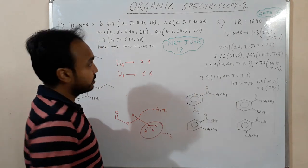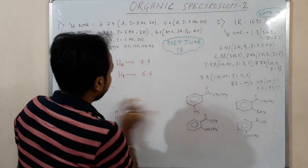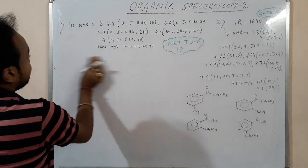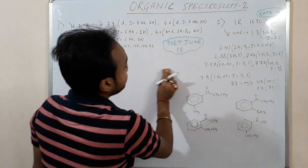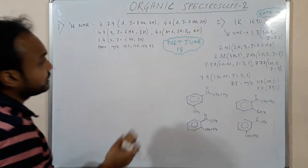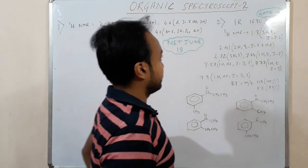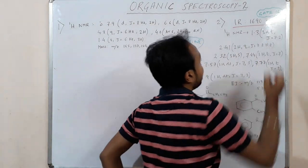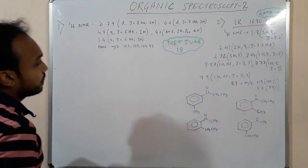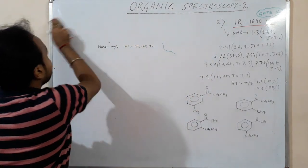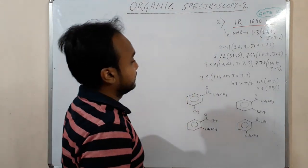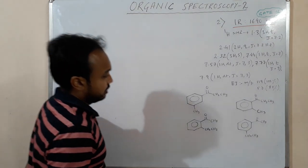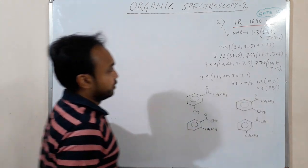This problem came in the GATE June 2018 exam. Moving to the second problem, which is a similar type from GATE 2016. We have given an IR value of 1690 cm⁻¹. This means it is a conjugated ketone. All the structures given have a conjugated ketone.